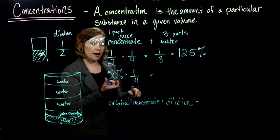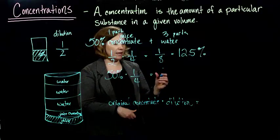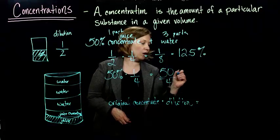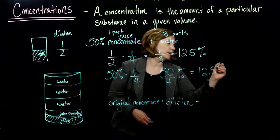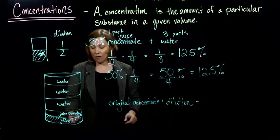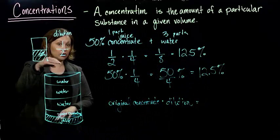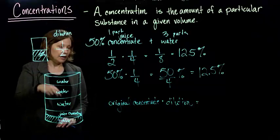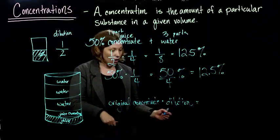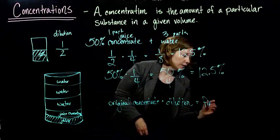Or, if we just put in our calculator, we have 50% times one-fourth, which is 50 over 4%, we get the same answer, 12.5%. And so, 12.5% of our new solution that we've created by diluting that concentrate is our final concentration.